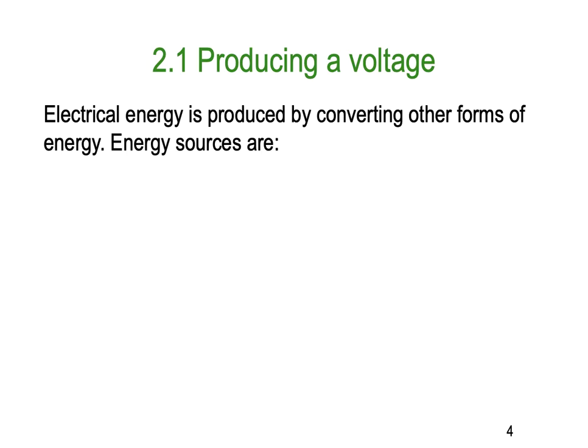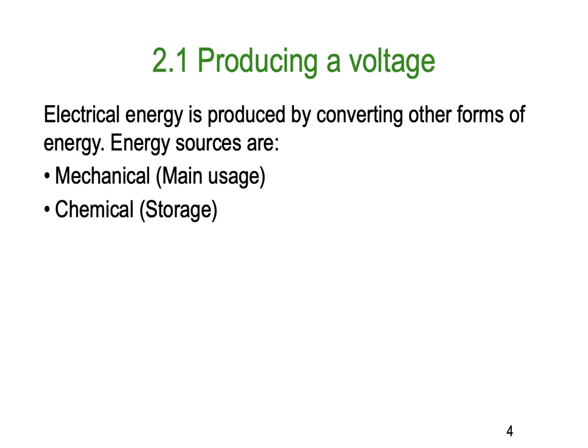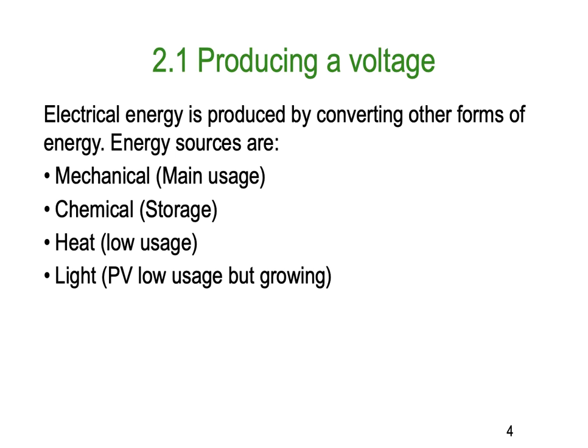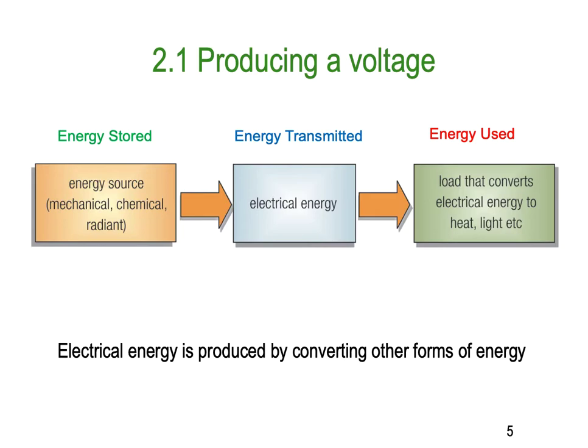The first thing is producing a voltage or an EMF. Electrical energy is produced by converting other forms of energy. Those electrical sources are mechanical, which is the main one — we take some kind of energy form, heat something up, and drive a turbine to drive a generator. We also use chemical energy, typically in the form of batteries. Heat we use indirectly, with one application where heat can be used directly. And growing these days is the use of light or PV, still low usage but growing.